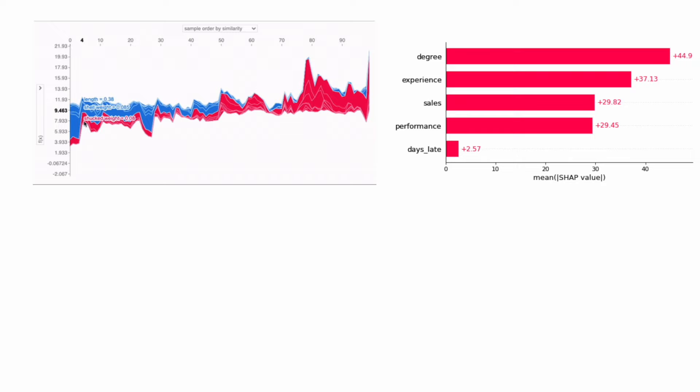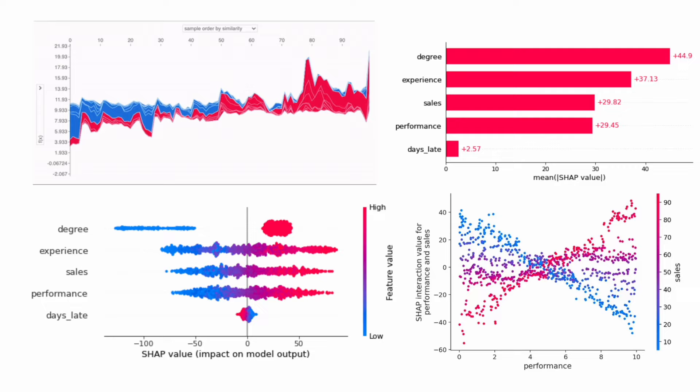SHAP values tell us which features are most important to an individual prediction. We can also combine or aggregate SHAP values from multiple predictions. This includes the force plot, mean SHAP plot, beeswarm plot, and dependence plot. These plots can tell us how the model works as a whole. At this point, you may be asking yourself: why even bother? Is it not enough that the model is making accurate predictions? Do we really need to understand how it is making those predictions?